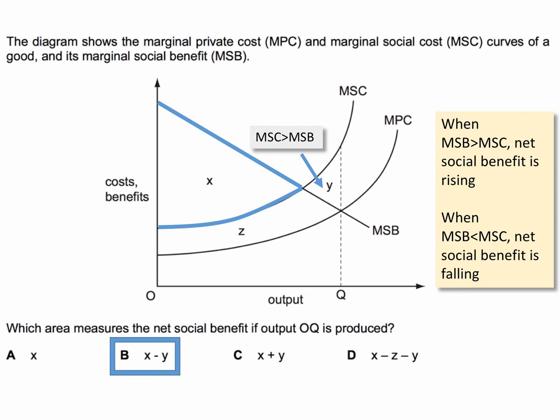Social benefit is rising in net terms in area X, but falling in area Y until we reach output OQ. Therefore, the net social benefit is X minus Y. The crucial bit is that the intersection between social cost and social benefit gives us the social optimum, which is to the left of Q. That's the social optimum. If we go beyond it to output Q, we suffer a deadweight loss of social welfare equal to area Y. But the question isn't about the deadweight loss — the question is about the net social benefit. So it's therefore X minus area Y.